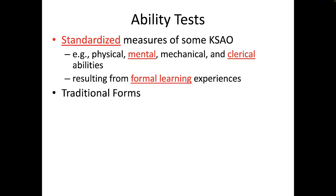There are two traditional forms of ability tests. The first is the aptitude test, which is said to measure knowledge acquired without formal training. Aptitude tests were thought to measure innate levels of underlying KSAOs — in other words, some type of so-called natural ability — or to represent the potential future use of innate abilities.